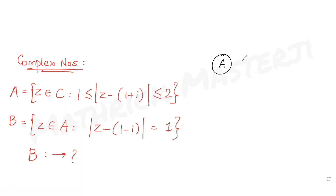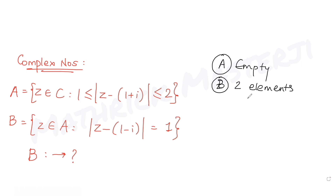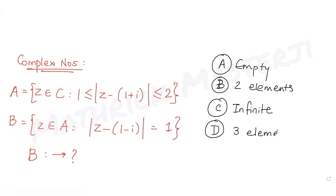The answer choices are: B is an empty set; B contains exactly two elements; B is an infinite set; and B contains exactly three elements. We need to figure out which one is correct.